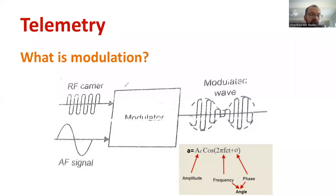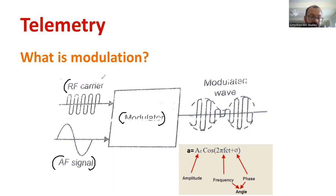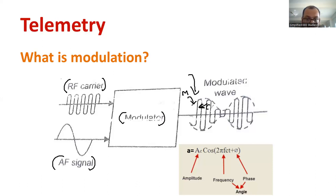Now I would like to discuss the block diagram of modulation. To perform modulation we require a modulator, which is a device that takes the audio frequency signal, or message signal, along with the RF carrier signal. The AF signal and RF carrier signals are combined using the modulator. At the output of the modulator we can see the resulting pattern — with the message signal and the carrier signal superimposed.